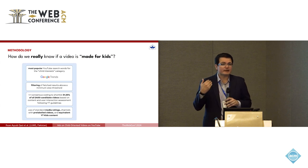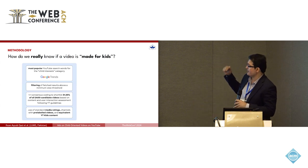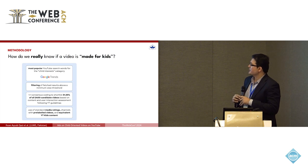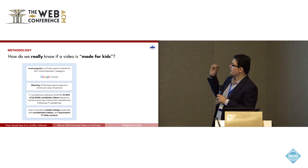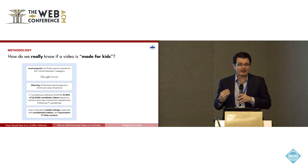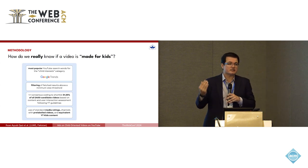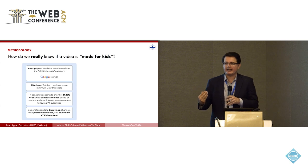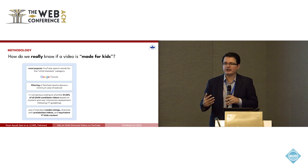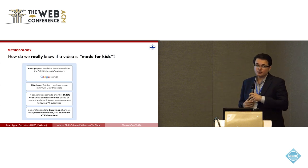How do we know if a video is made-for-kids, especially for unlabeled content? We first looked for search words most popular in child interest categories using Google Trends, then filtered for content above a minimum view threshold. We then had two independent coders perform consensus coding to ensure videos were child-oriented, following YouTube's own guidelines.